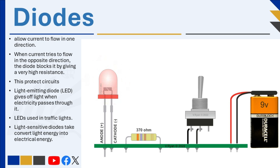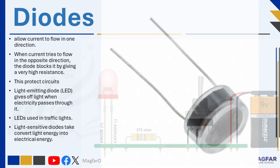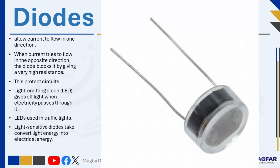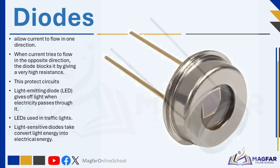There are also light-sensitive diodes, which work the opposite way — they take in light energy, like sunlight, and turn it into electrical energy.